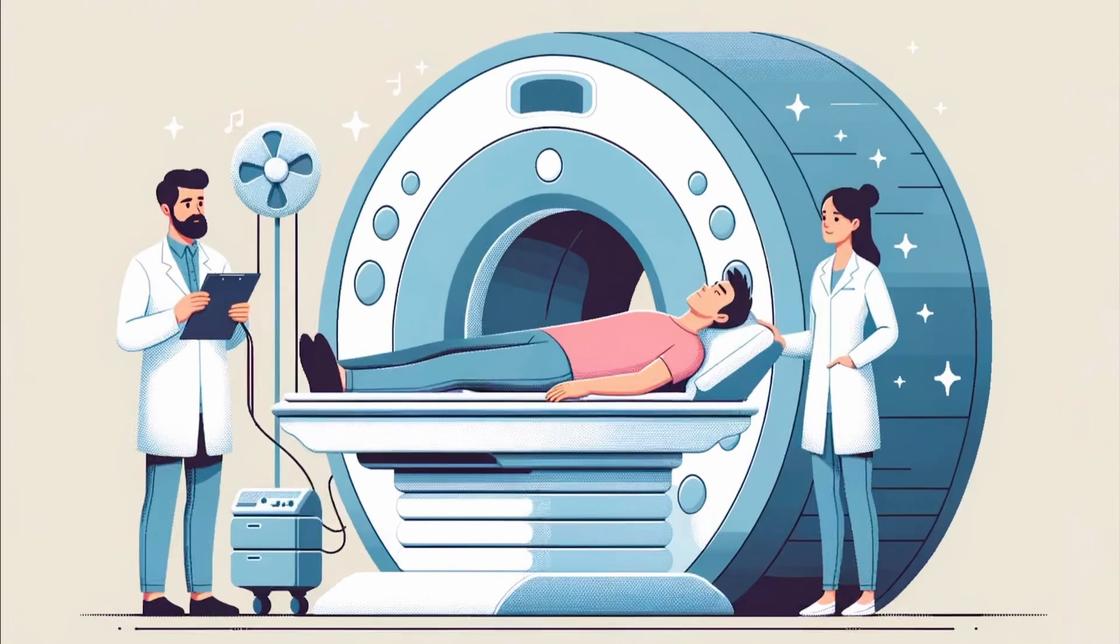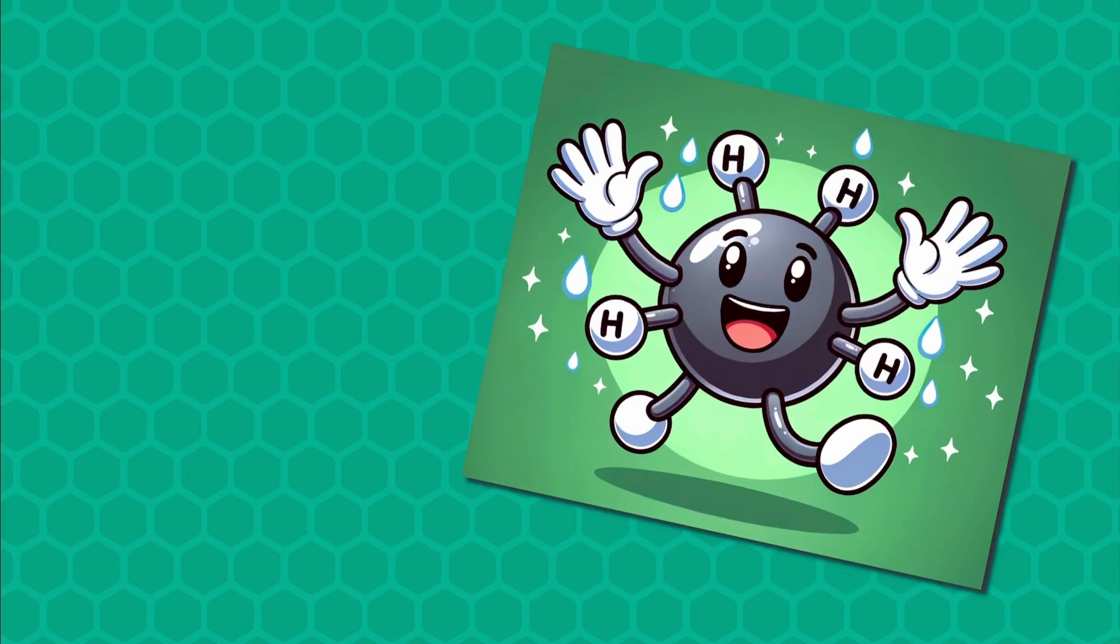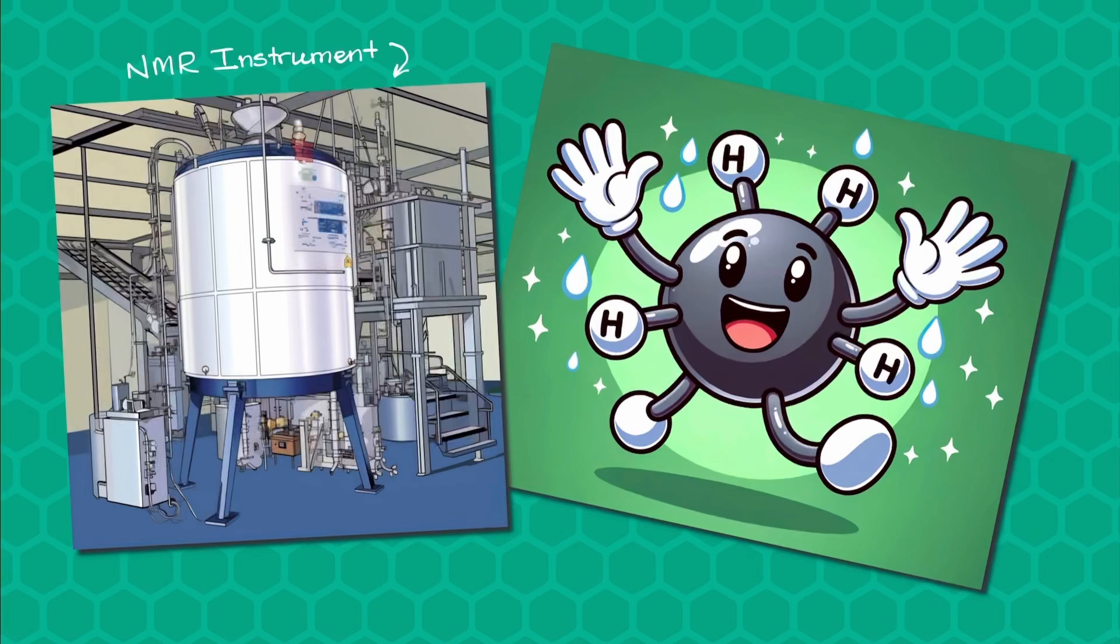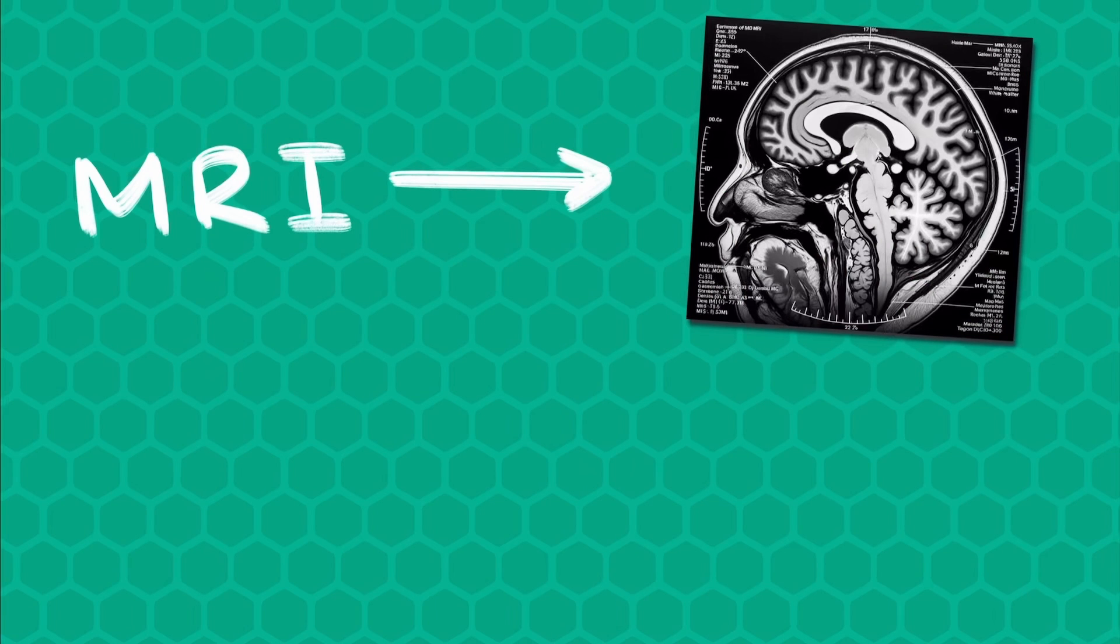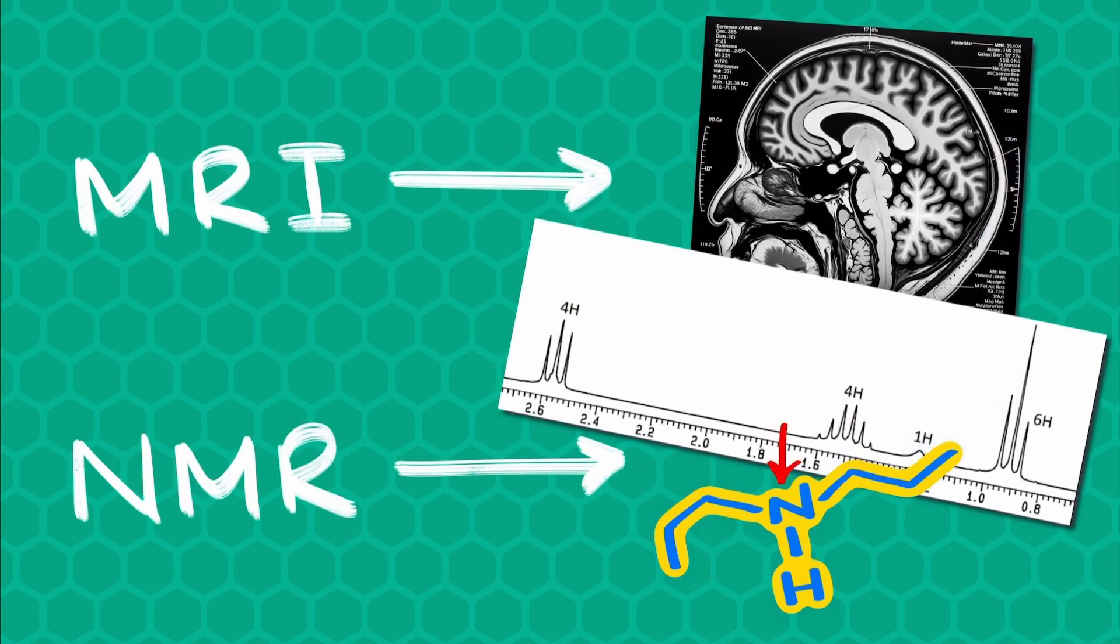Imagine yourself being placed into the MRI machine, but instead of you it's a molecule and instead of MRI machine it's an NMR instrument. And just like MRI can give you a pretty good idea what's going on with our body, NMR can tell you what sort of a molecule we have in front of us.